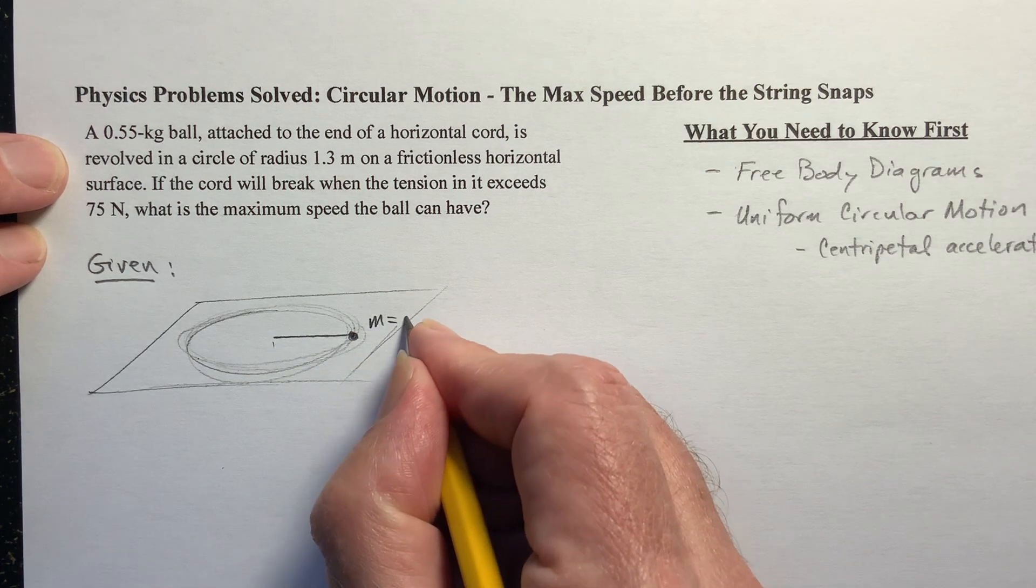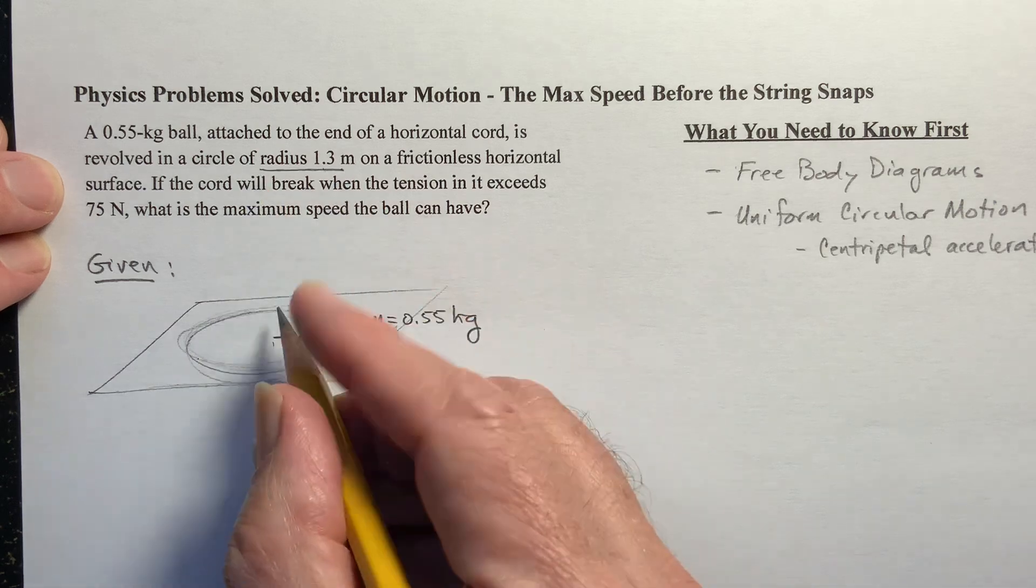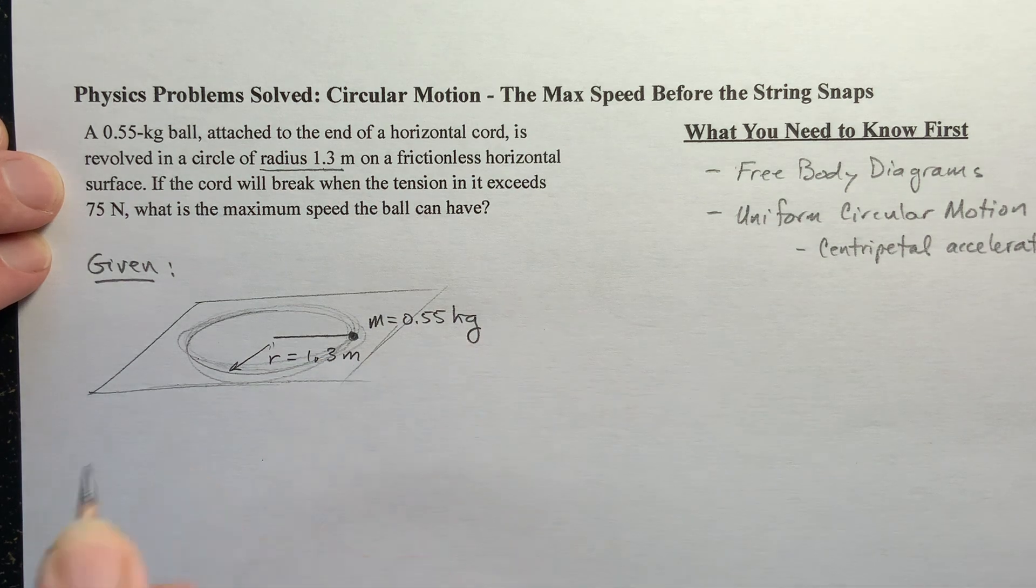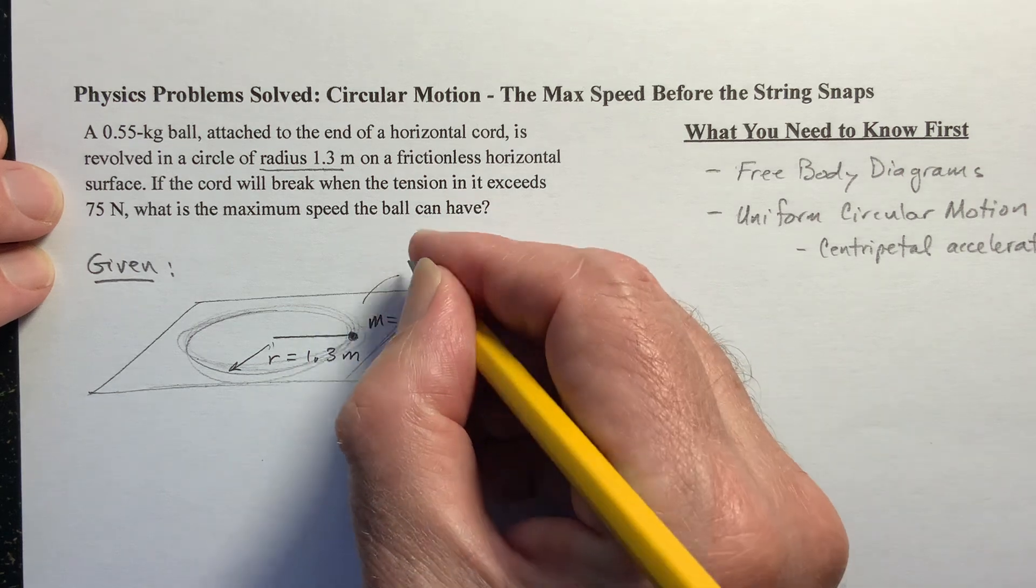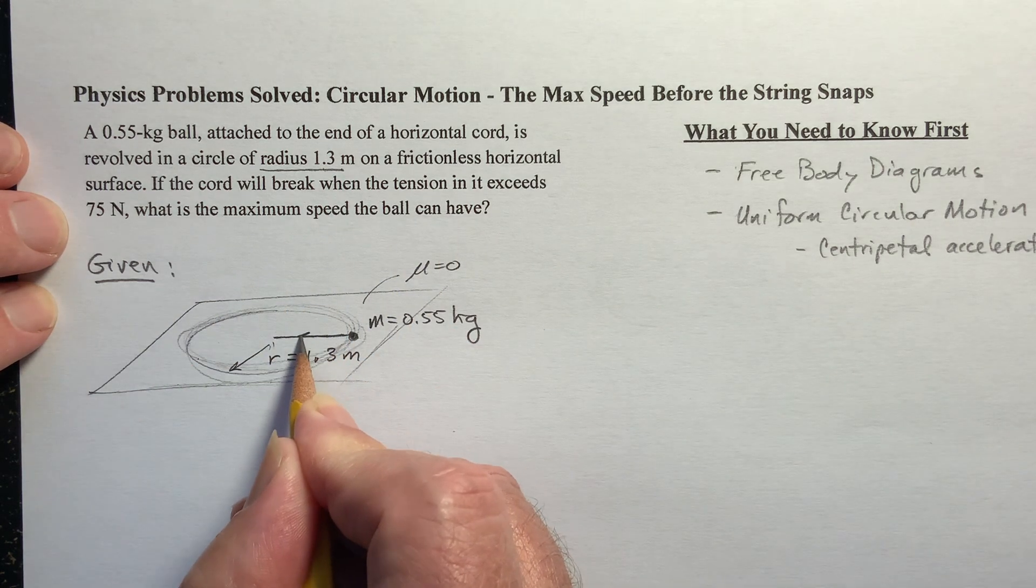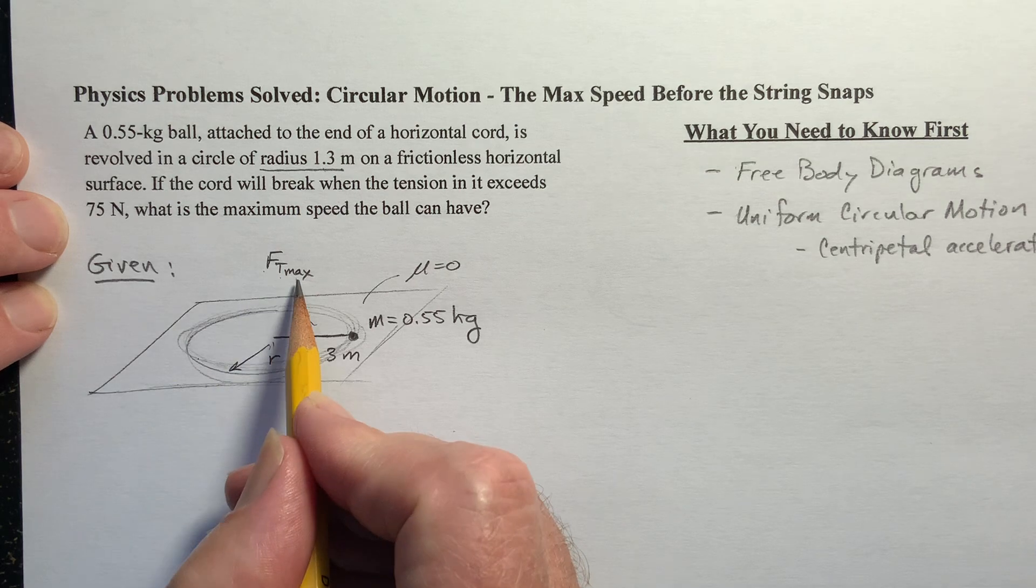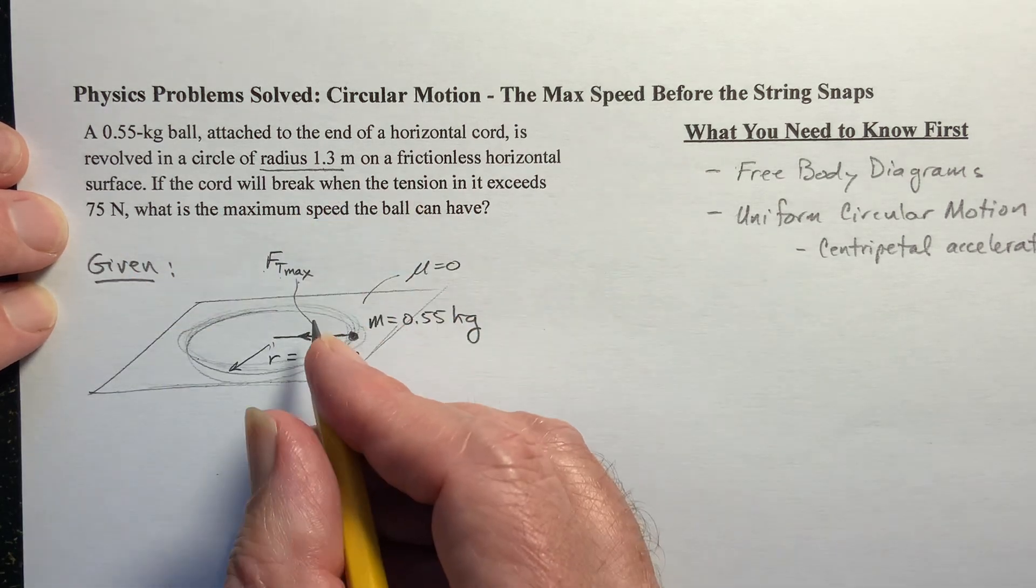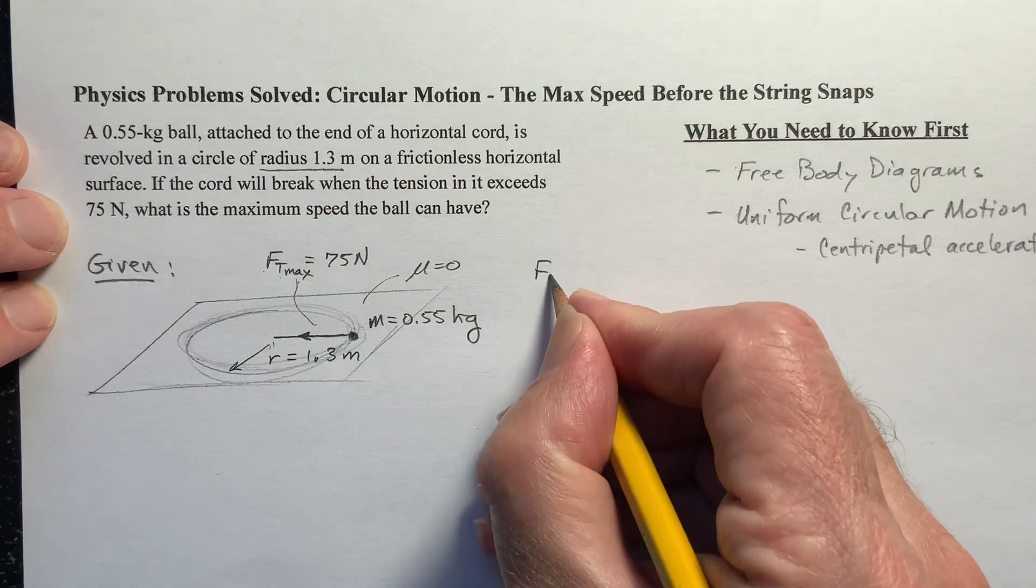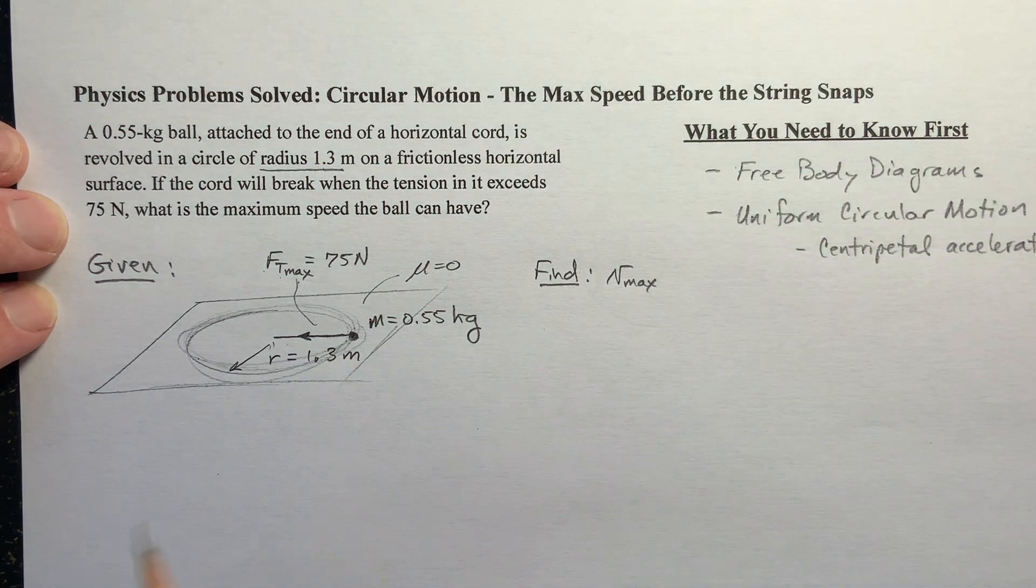And we know what the mass of the ball is, 0.55 kilogram. Revolved in a circle of radius 1.3. So the radius of this thing is 1.3 meters on a frictionless surface. So sometimes I just mark that mu equals zero. The coefficient of friction is zero. There's no friction in this problem. And then here we're going to have a maximum tension force. I'll call it FT max. It's a tension force and it's the maximum possible tension force before the cord breaks, equal to 75 newtons. Now this thing is moving around in a circle. And what we want to find is what is the maximum speed I can go without this cord breaking or before the string snaps.